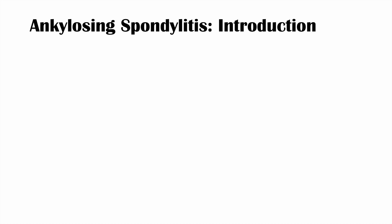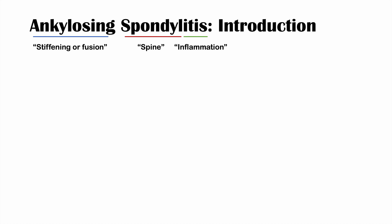So what is ankylosing spondylitis? If we look at the words in more detail, ankylosing refers to stiffening or fusion. If we break the word spondylitis down, the prefix spondyl means spine and itis means inflammation. So ankylosing spondylitis is essentially a fusion of the spine due to inflammation. More specifically, ankylosing spondylitis is a chronic seronegative inflammatory spondyloarthropathy.